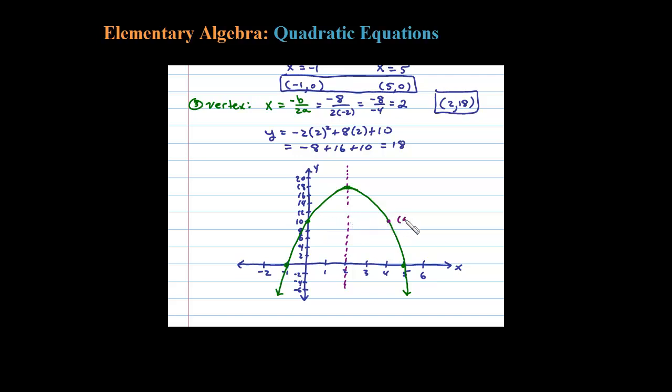And certainly the y value is going to be the same as the y-intercept here, 10. So (4, 10) is my fifth point. I have my two x-intercepts, my y-intercept, my vertex, and another point on the graph. Here's a rough sketch of the original quadratic.